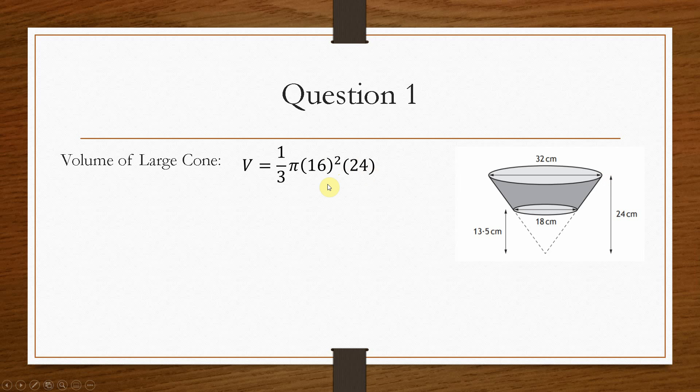Now, this would be in a calculator paper. So you would just pop this into the calculator, and we would get a value for the volume of the large cone to be 6433.98 centimetres cubed. Now, it's very important that you keep the units there.